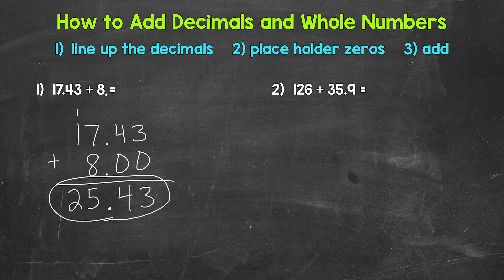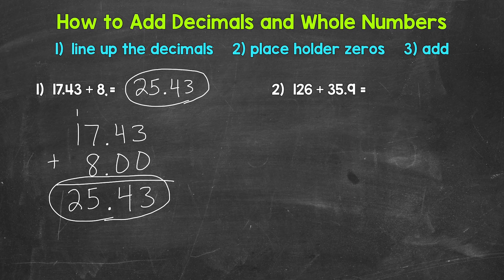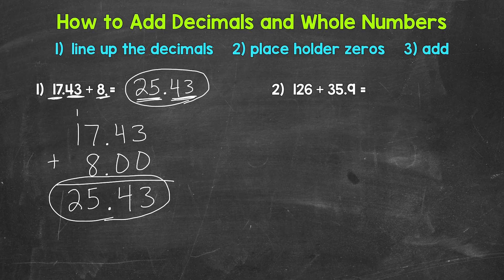So 17 and 43 hundredths plus 8 equals 25 and 43 hundredths. Whenever we have an addition problem involving a decimal and a whole number, the decimal digits are going to stay the same. For example, in number 1 we end up with 43 hundredths because 8 didn't have any decimal digits. Basically, we're just adding the whole numbers: 17 plus 8 is 25, and then we have 43 hundredths. Something to keep in mind when adding a decimal and a whole number.